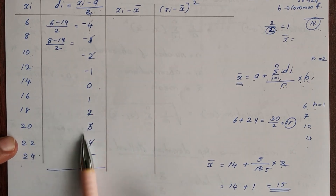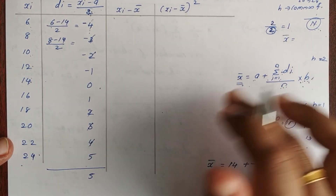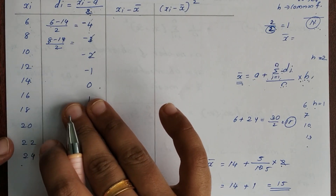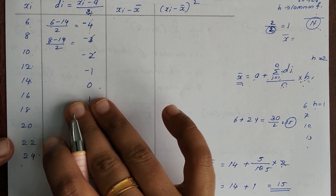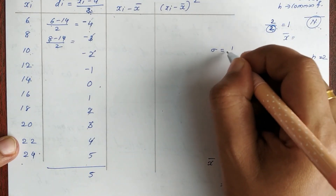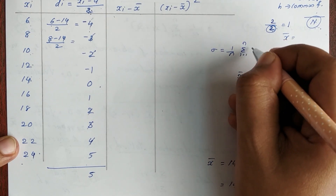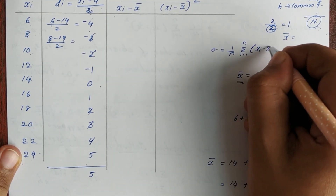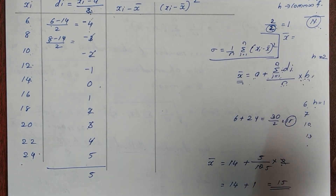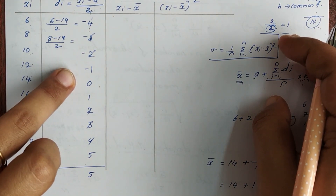That's all. You can find the mean either by the direct method — sum of observations divided by total number of observations — or by the step deviation method. Here we have shown the variance equation: 1 by N into summation i equals 1 to N of (xi minus x bar) the whole square. We are going to do step deviation next.